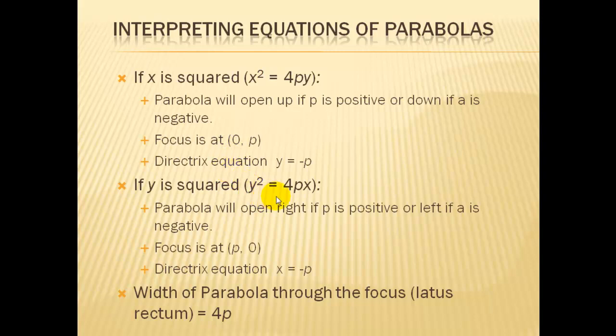If the y is squared, then it's a horizontal parabola, and again a positive value of p will be to the right, and a negative value of p will be to the left. And again you can record here for your notes how to get the coordinates of our focus and our directrix.